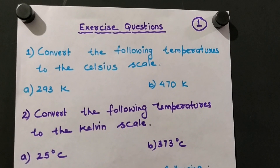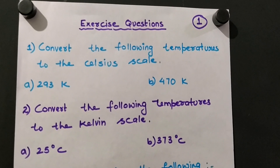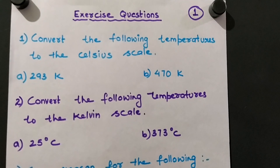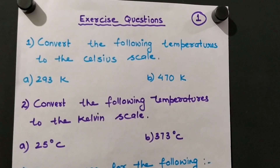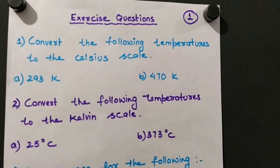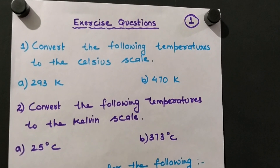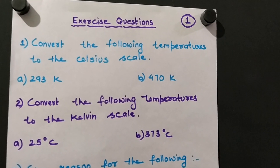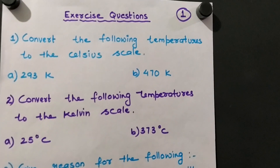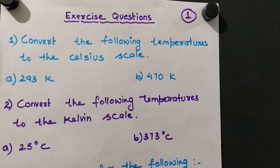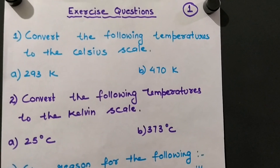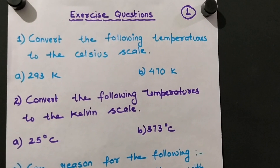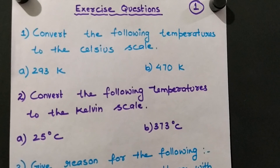The first question is to convert temperatures to the Celsius scale. Since we have already done these kinds of questions, we just have to use the formula: C + 273 = K (Kelvin). Put the value of K as 293 for the first option and 470 for the second option, then find the value of C from the formula. Since we have done these questions in earlier classes, I am not solving it this time. Similarly, the second question is to convert temperatures to the Kelvin scale — that is, 25°C and 373°C to Kelvin.